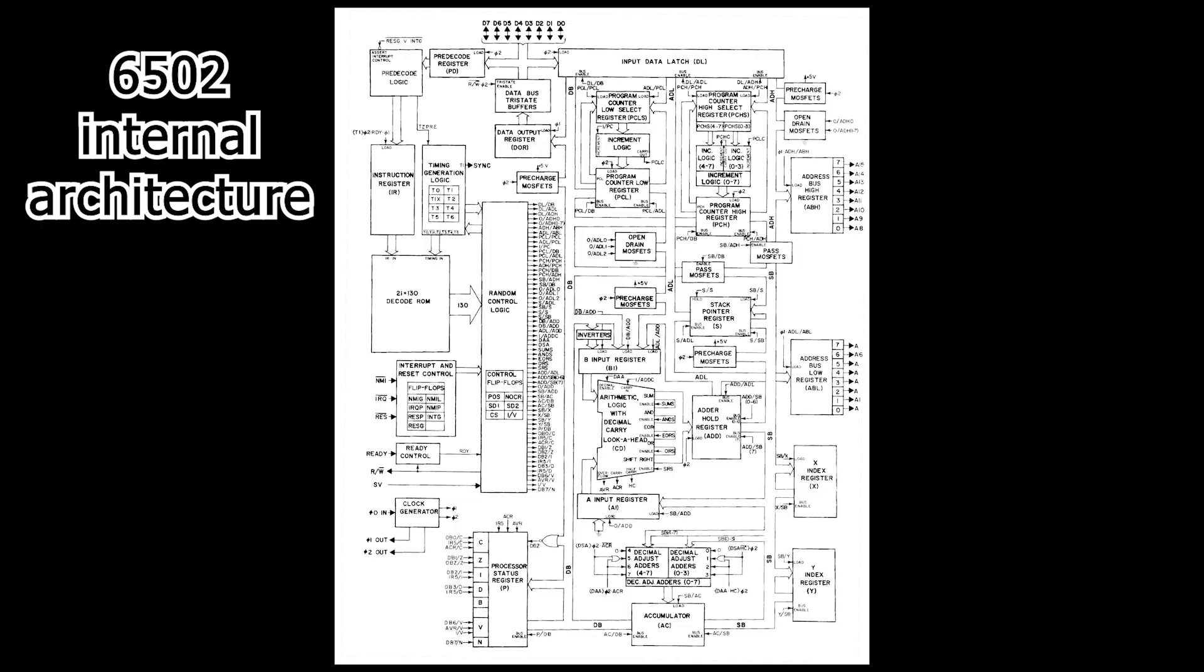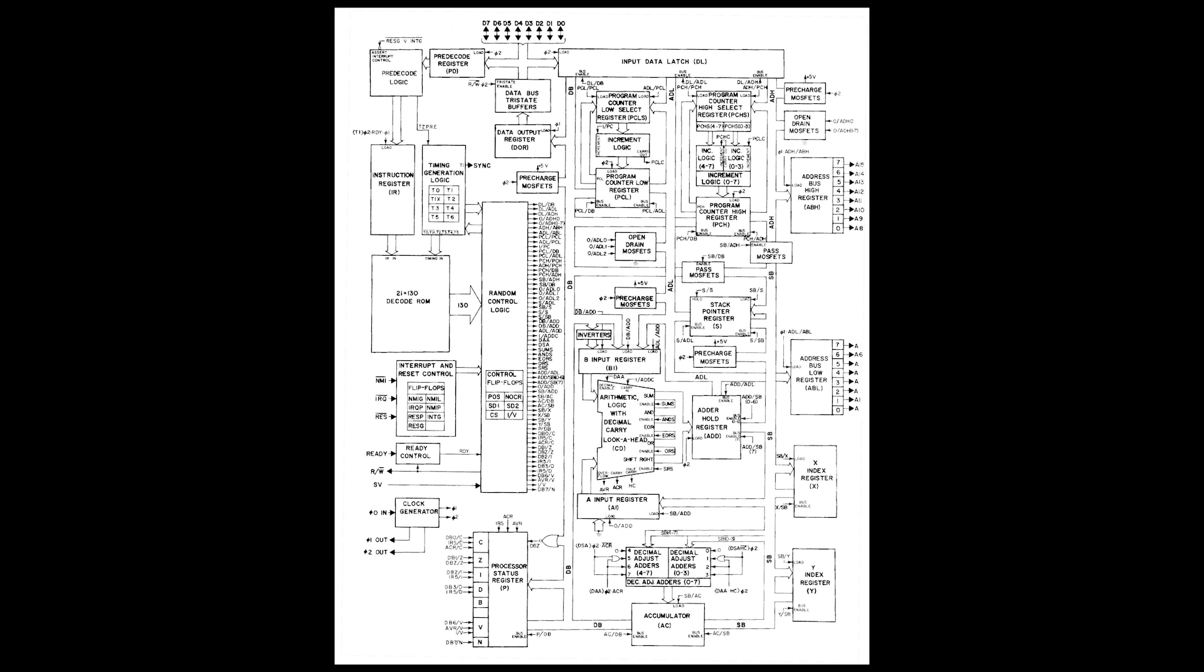Before we jump into building the Commodore 64's CPU, let's have a look at the architecture of the 6502 CPU. If we break it down, we see the key components that define a von Neumann architecture: the accumulator, the program counter, the instruction register, the ALU and the sequencer. These aren't unique to the 6502. These ideas go back to the earliest digital computers.